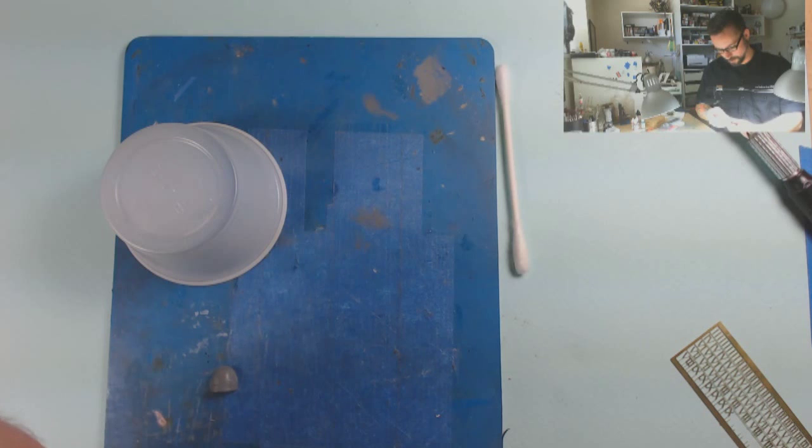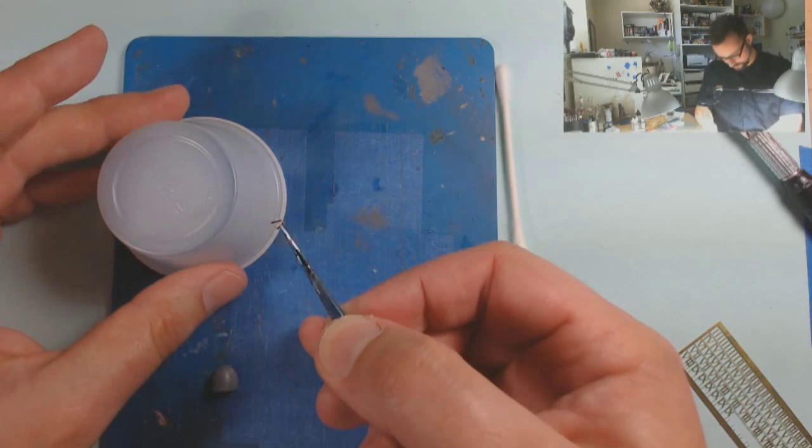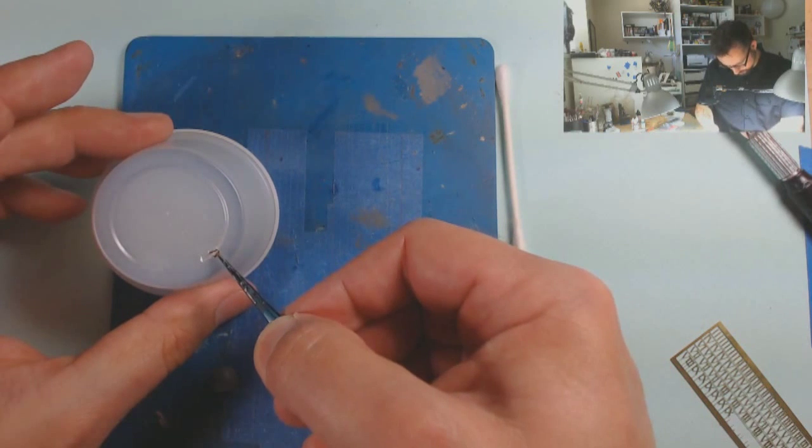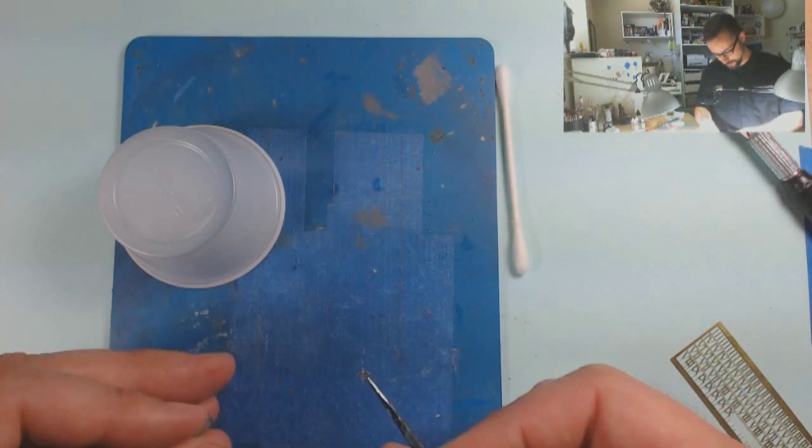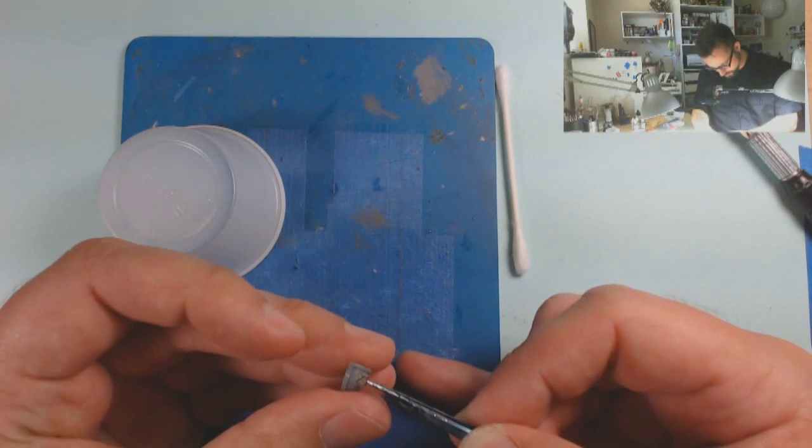I am going to start by putting one end of it in the glue. And that's the end I'm going to put down first. So I'm actually just going to line it up on the edge of the pauldron here.